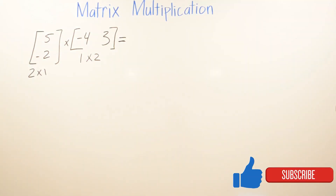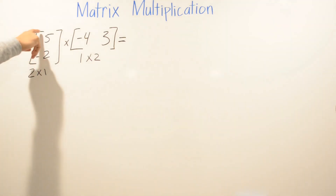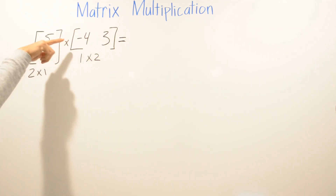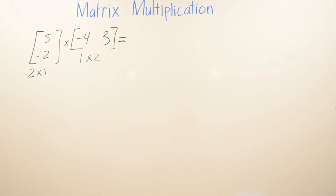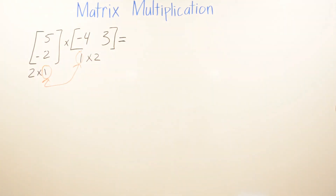Now in this next example we have a matrix with 5 and negative 2, and the other matrix has negative 4 and 3. The first matrix is a 2 by 1 matrix — two rows and one column. The second matrix has one row and two columns. We check the rule: the second number from the first matrix and the first number from the second matrix are both 1, so we can multiply.